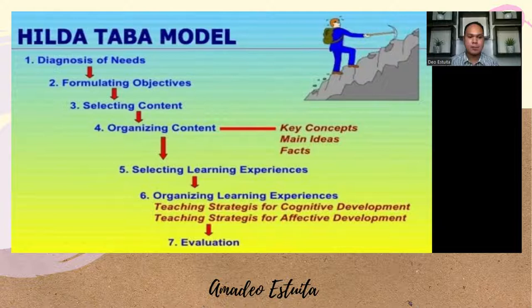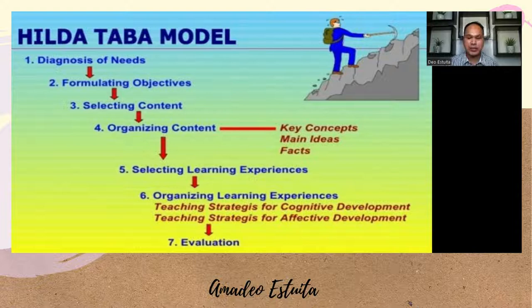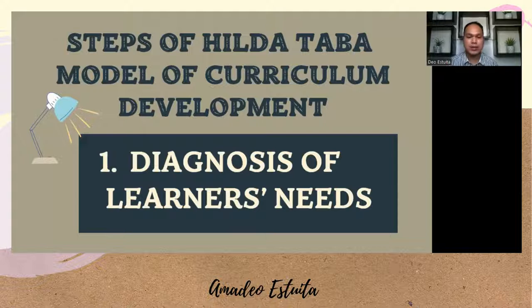Let's move on to the seven steps of the Hilda Taba Model of Curriculum Development. The first step is diagnosis of needs. Next is formulation of objectives. Third is selection of content. Fourth is the organization of content. The fifth step is selection of learning experiences. The sixth is the organization of learning experiences. And the last step is evaluation.